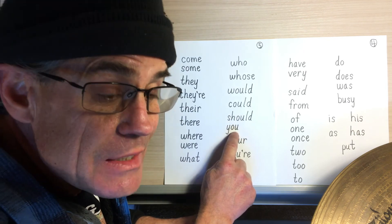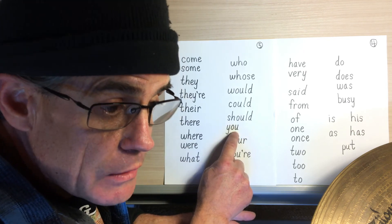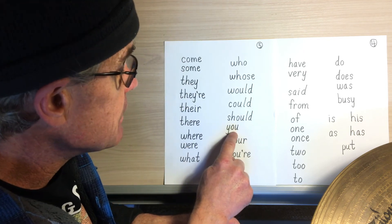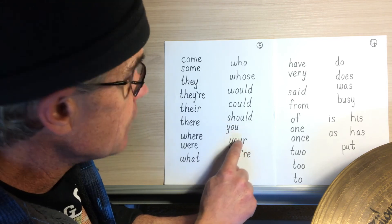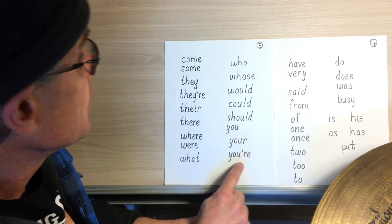Here again, the O-U doesn't do what we learned it would normally do, which is 'ow.' Instead it does 'oo,' so you get 'you' and 'your.'